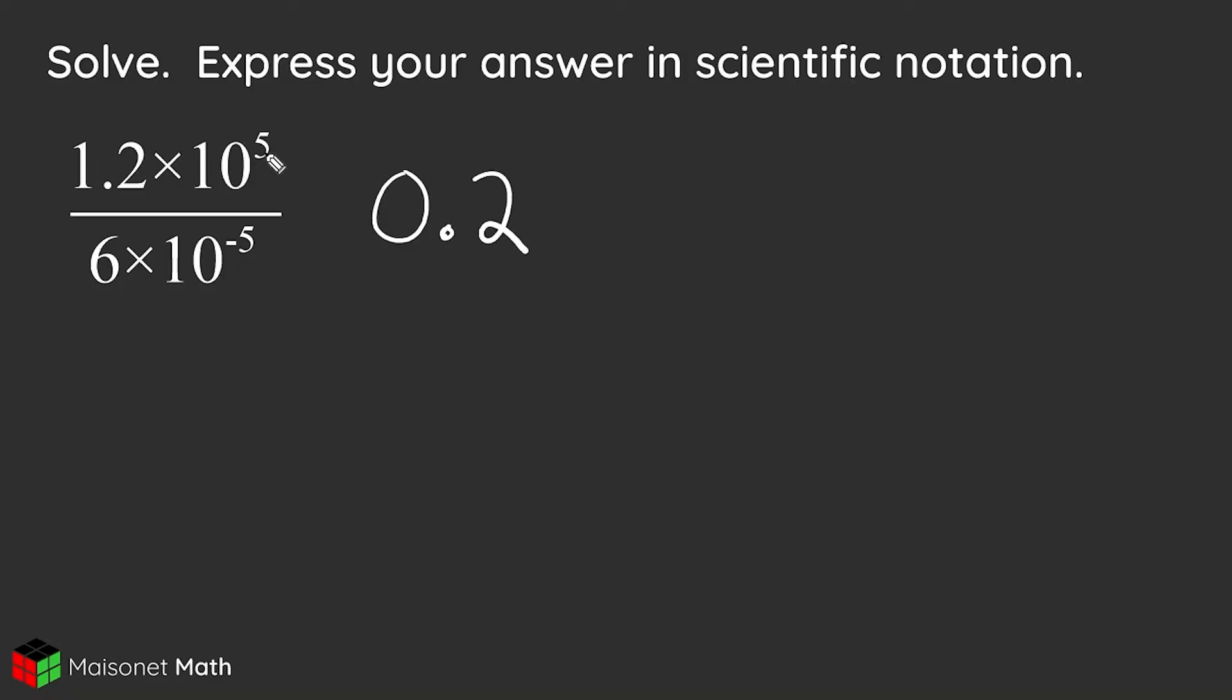All right, now we take 10 to the fifth power and we divide it by 10 to the negative fifth power. Now, the laws of exponents state that when we're dividing bases that are the same, we take the exponents and we subtract them. So we're going to write times 10 and then our exponent right here is going to be the result of 5 minus negative 5.